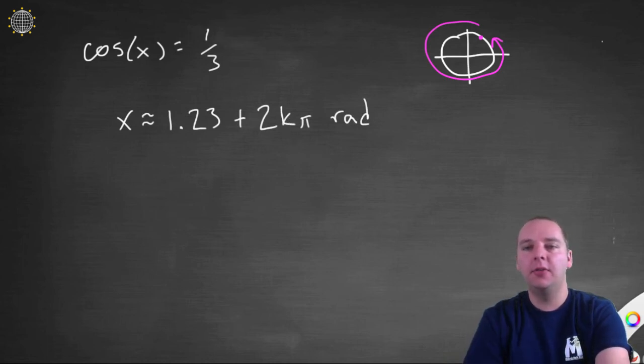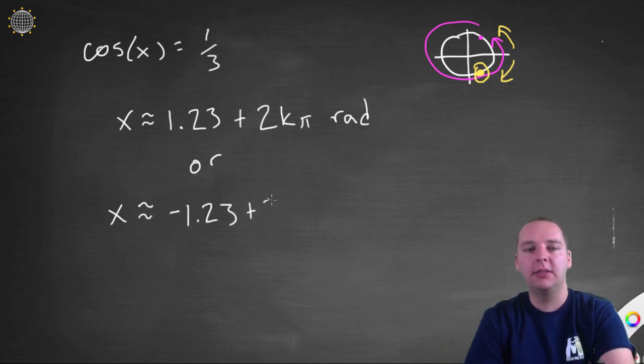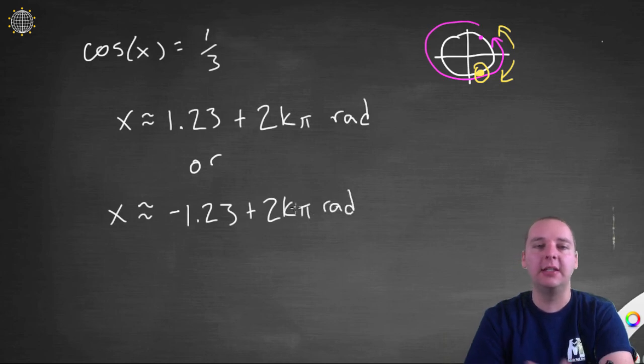But don't forget, there's another radian angle that should be a solution as well, and that's the one down here in yellow. So now, how can we find this angle? Because this is not 1 point 2 3 radians, that's above the x axis. This would be negative 1 point 2 3 radians. So, we need to add in an additional solution, so we say x could also be approximately negative 1 point 2 3 plus 2 k pi radians, where k is any integer.